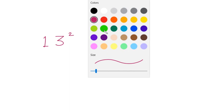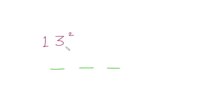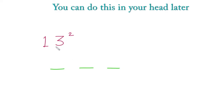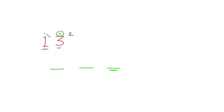First of all, we have to make three places like this. There are three short steps to follow. The first step is to multiply this number by itself and write it here. The second step, multiply this number by itself and write it here. The third and final step, multiply all these three numbers together.